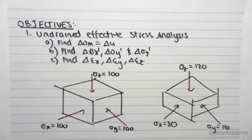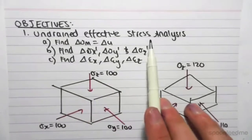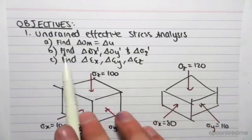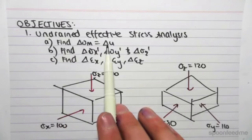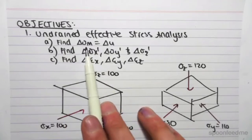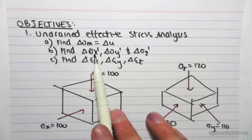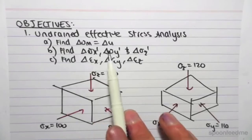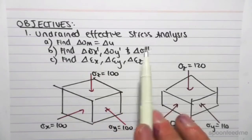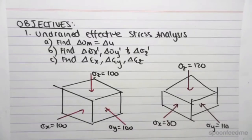Hey guys, the objective of this video is to understand an undrained example using the effective stress analysis. We're going to do that by finding the change in the pore water pressure, which is equal to the change in the mean stress. We can then find the change in the effective stress in the x, y, and z direction, and then find the strains in the x, y, and z direction.